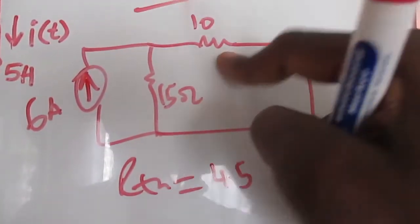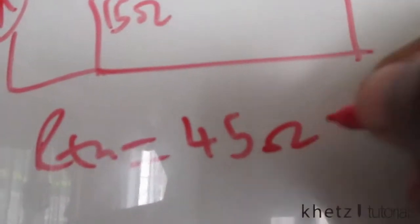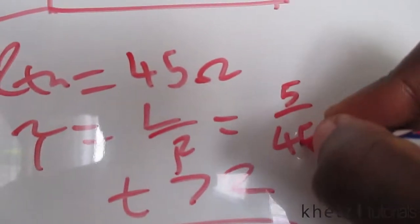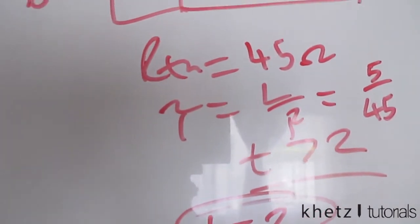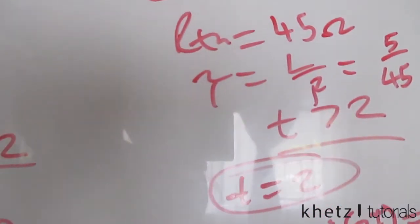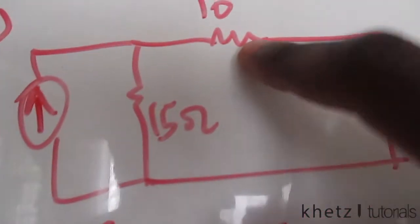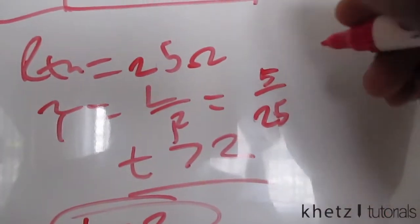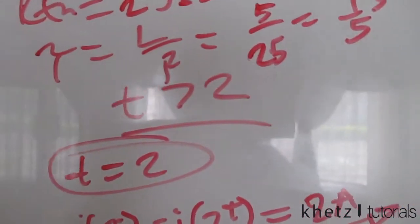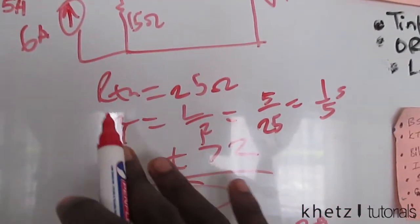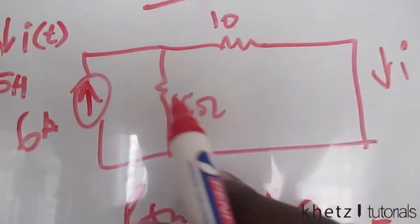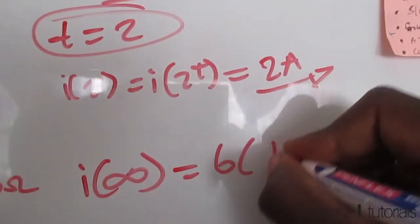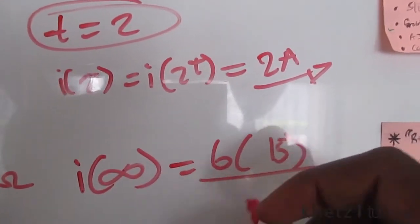For t > 2, finding the new Rth: looking from the storage element's terminals with the source removed, we have 15 Ω and 10 Ω in series (the 20 Ω is shorted out), giving Rth = 15 + 10 = 25 Ω. The new time constant is τ = L/R = 5/25 = 1/5 seconds. For i∞, using current division: i∞ = 6 × 15 / (10 + 15) = 90/25.